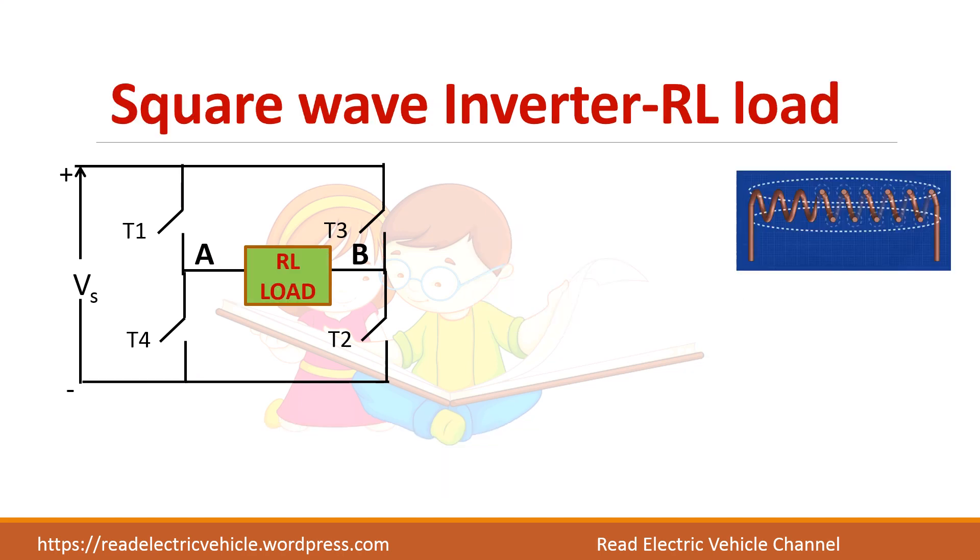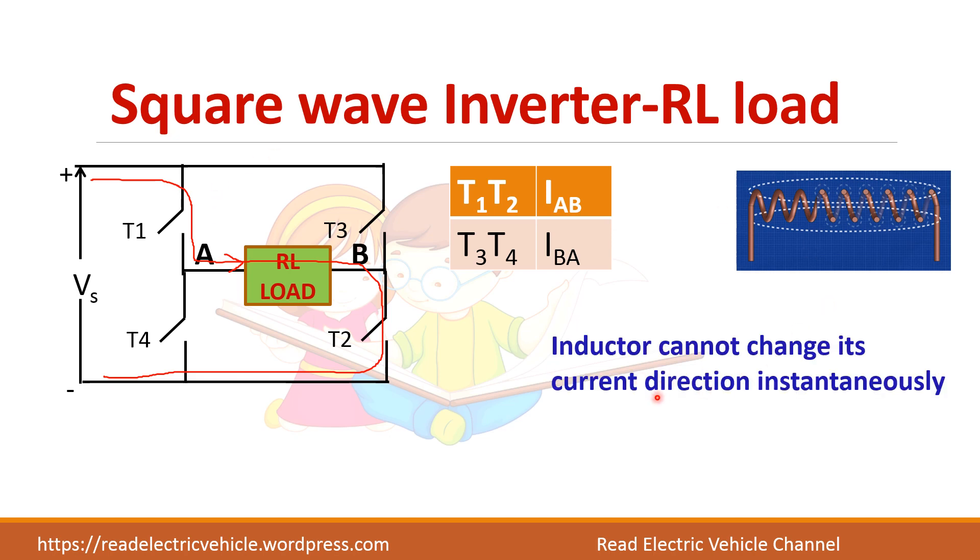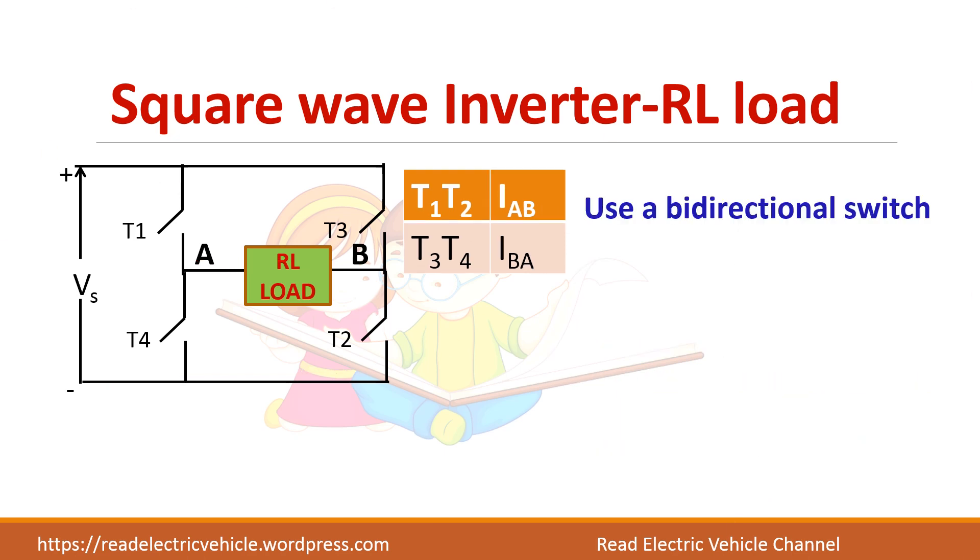Now let us consider the RL load. You cannot use the same circuit for RL load. Because when T1 and T2 conduct, the current flows from A to B. When T3 and T4 are now turned on, the current has to flow in opposite direction. But the property of inductance is that it cannot allow its current direction to change immediately. So we have to provide a path for this current to flow in the same direction for some time. So you can go for a bidirectional switch, that is bidirectional current carrying capability switch. In case of non-resistive load it is always preferred to use a diode in anti-parallel with the switches, so that it allows the current to flow in the same direction for some time.